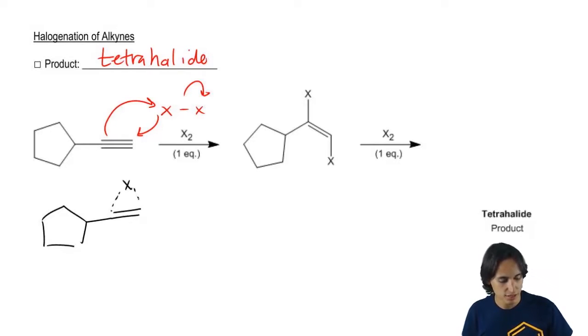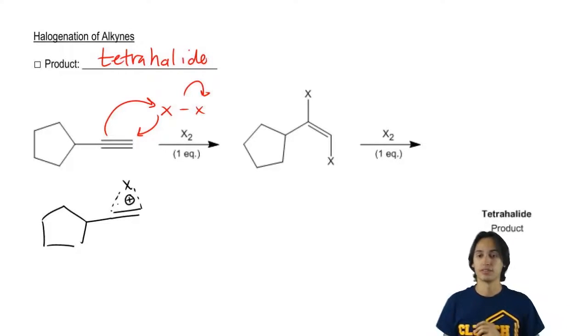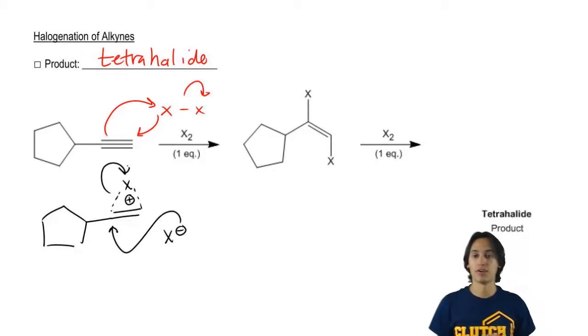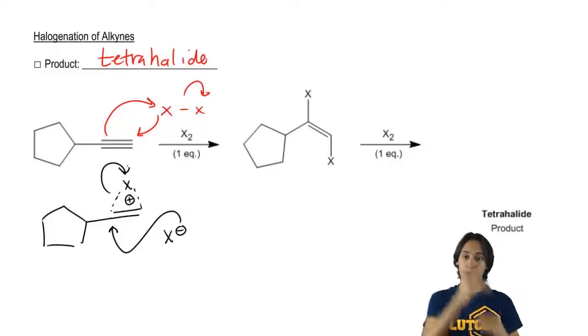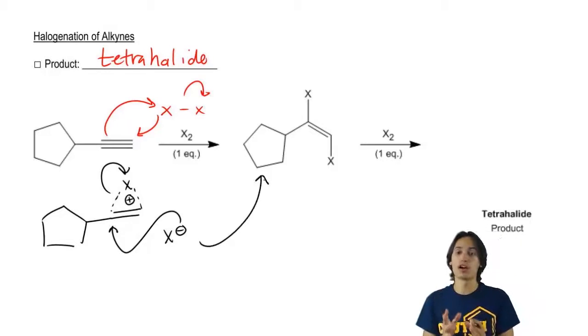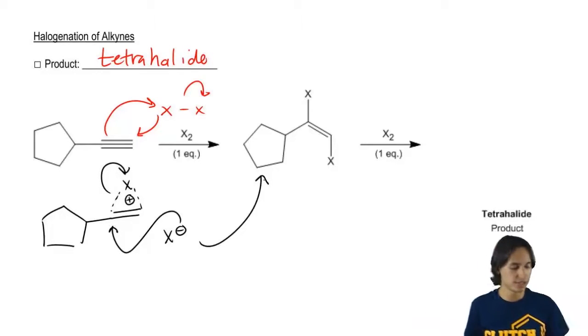So I'd have X like that and like that. And then another X comes around and goes to the Markovnikov position and kicks out the X that's on the bridge. So what I'd wind up getting is this original product where I have vicinal dihalides.